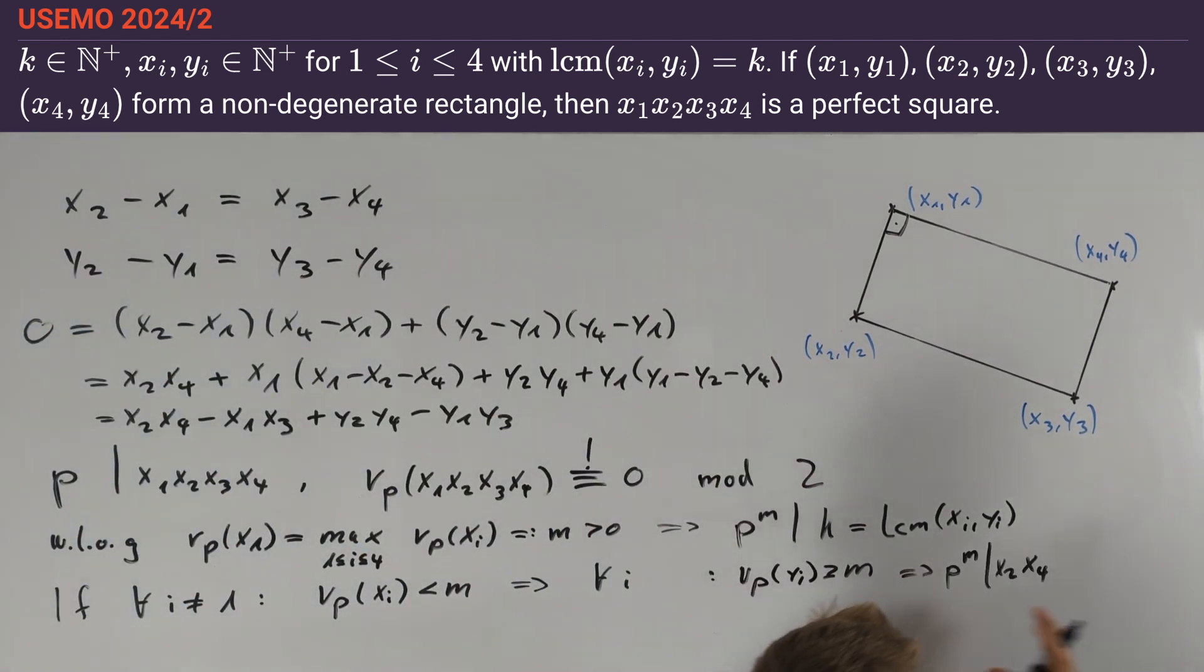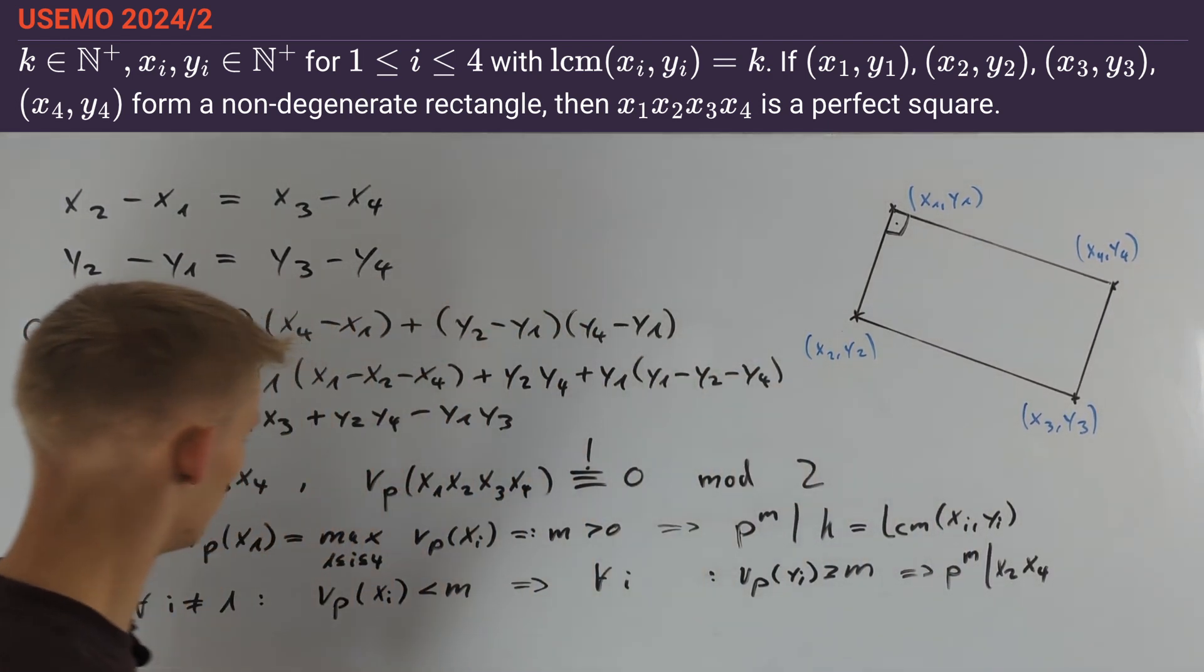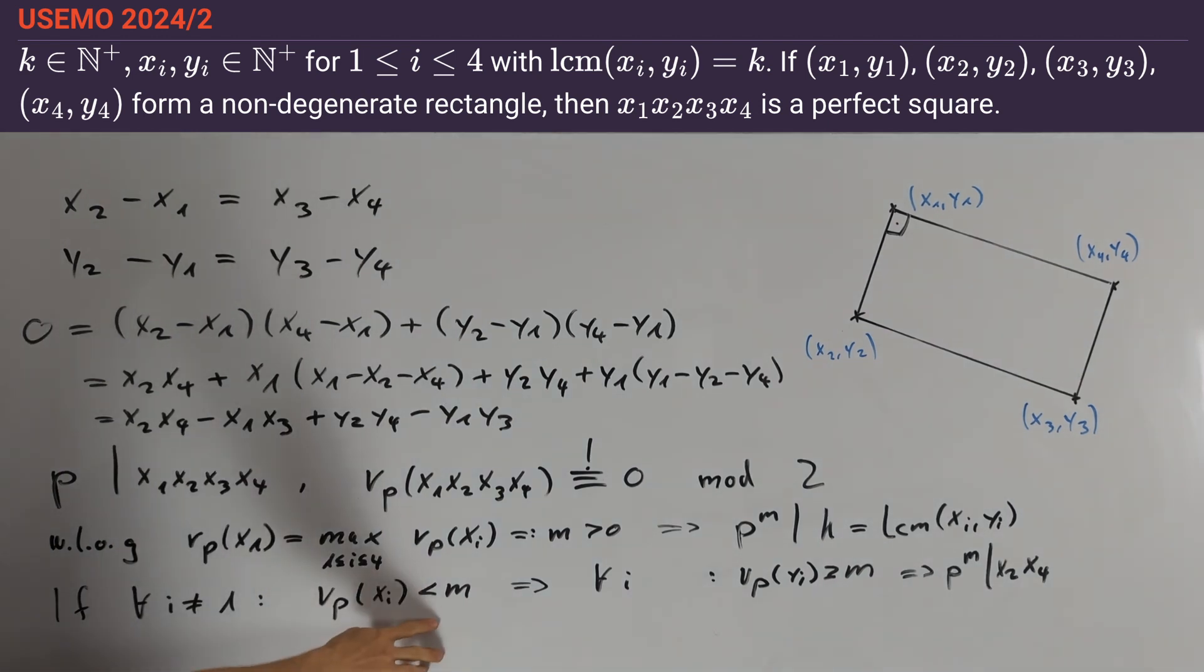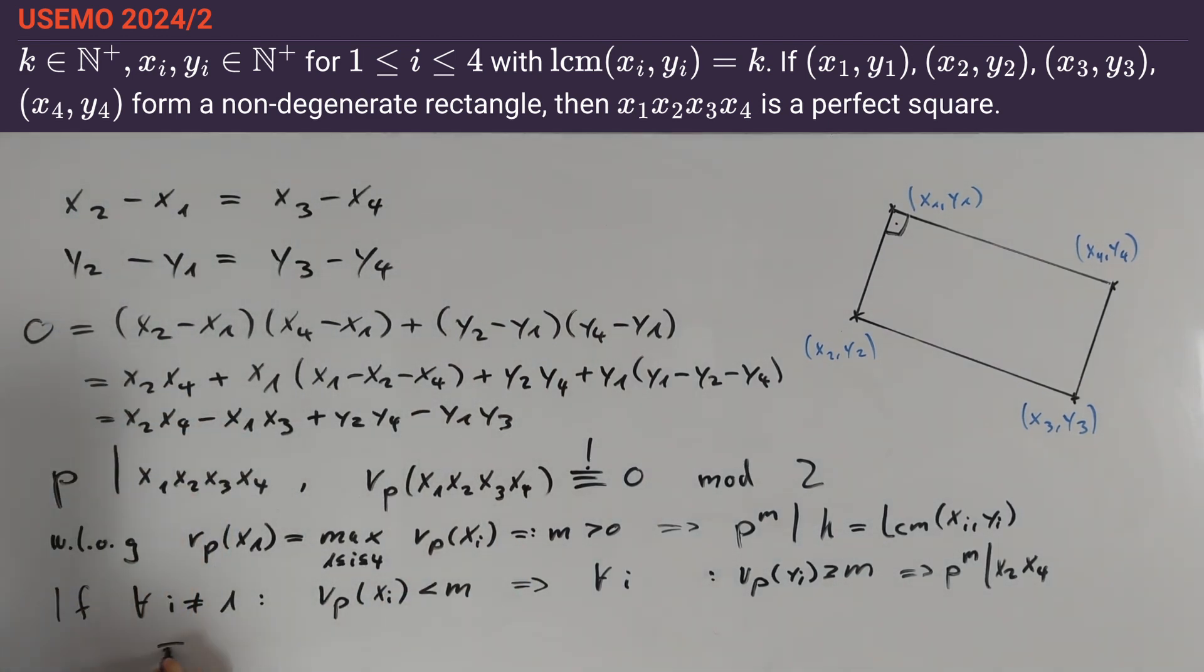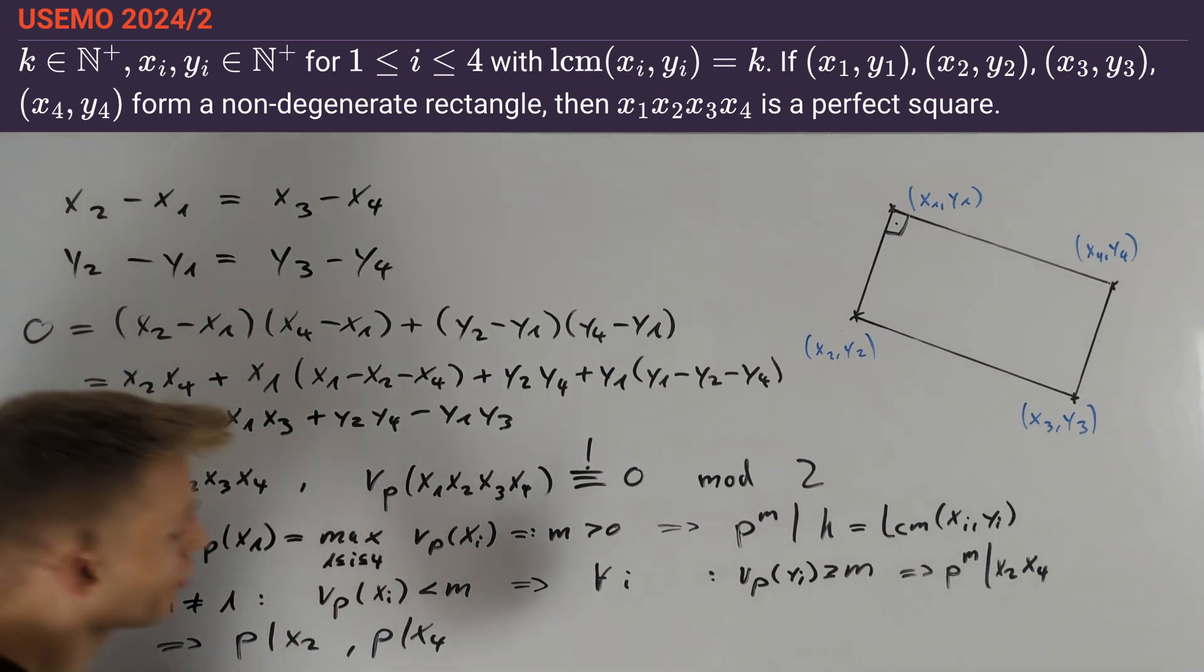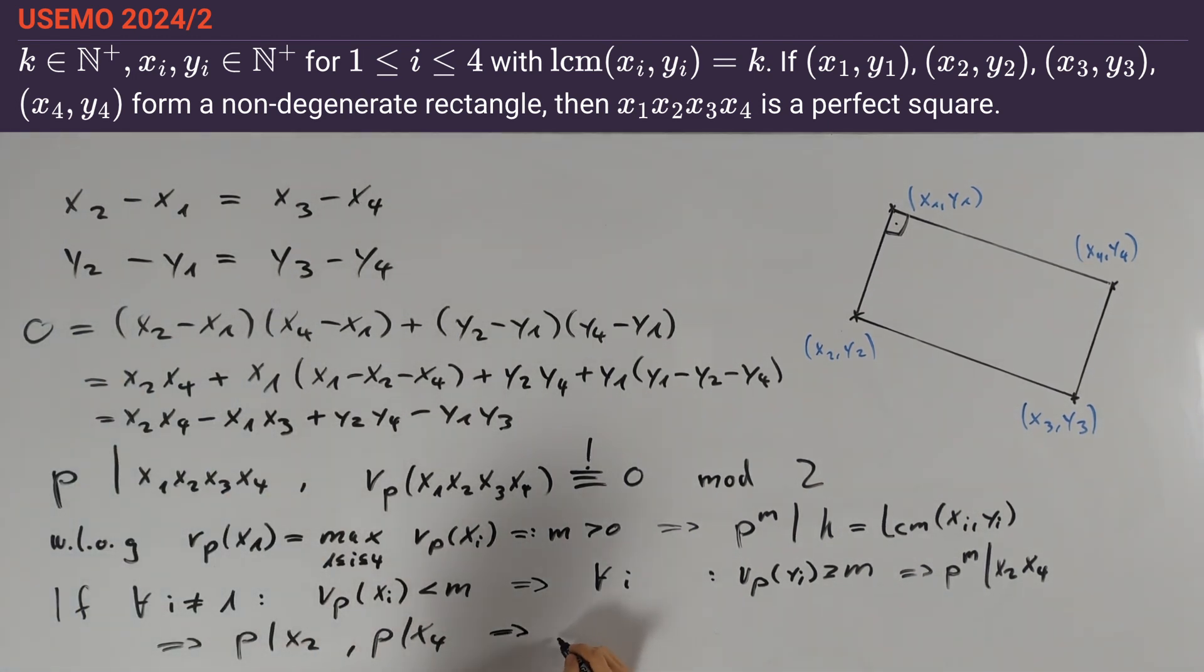Together with our assumption that nu_p(xi) < m for i = 2 and 4, this implies that p divides x2 and p divides x4. Since x1 is divisible by p, we can use our first equation to conclude that p also divides x3.